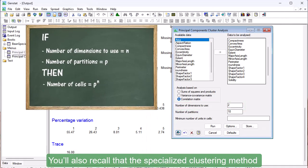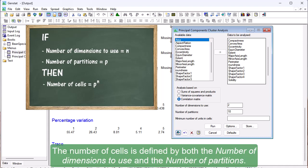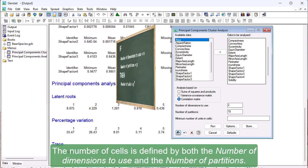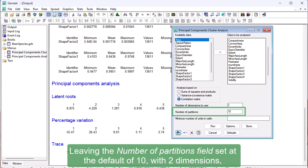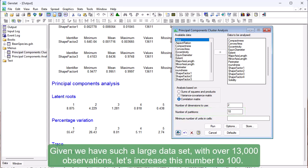You'll also recall that the Specialised Clustering method partitions the multidimensional space defined by the Principal Components into cells. The number of cells is defined by both the number of dimensions to use and the number of partitions. Leaving the number of partitions field set at the default of 10 with 2 dimensions results in 10 to the power of 2 cells, meaning 100 cells. Given we have such a large dataset with over 13,000 observations, let's increase this number to 100.